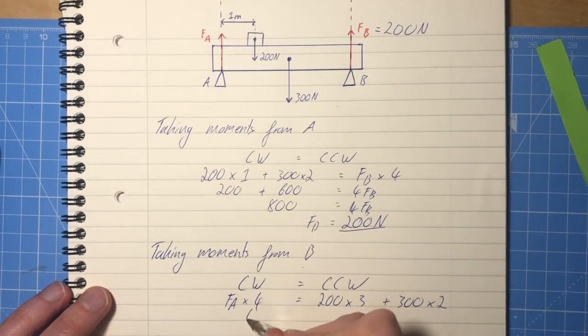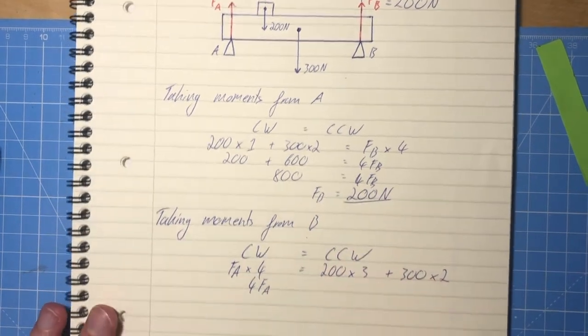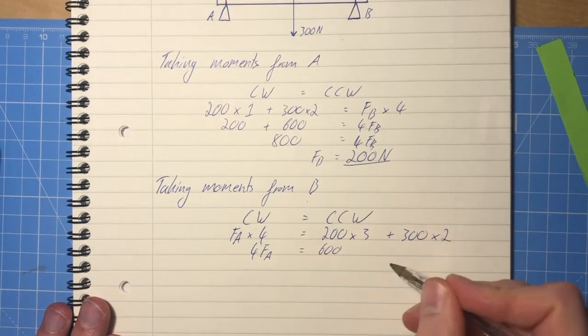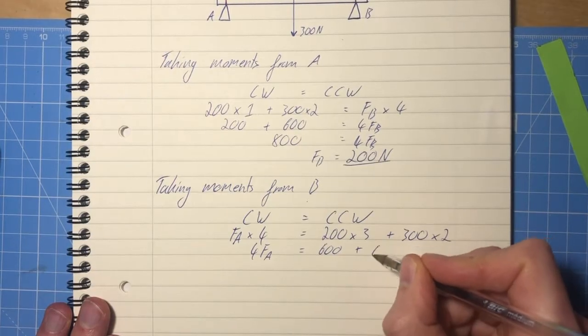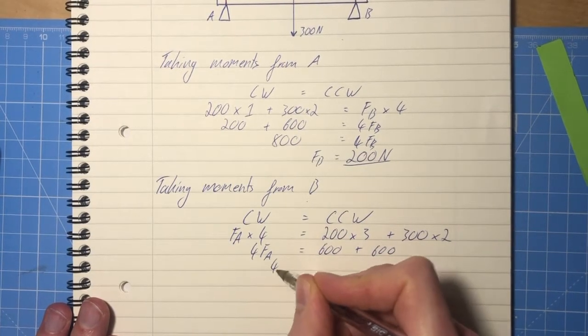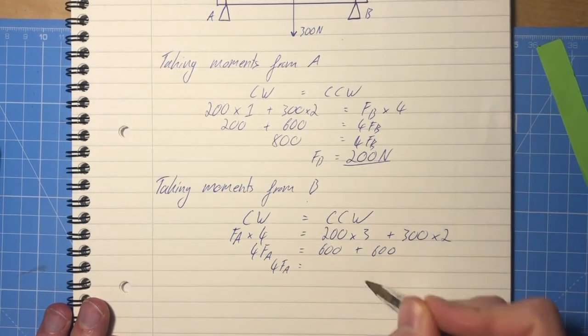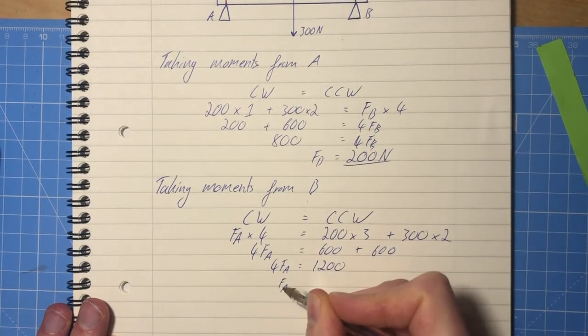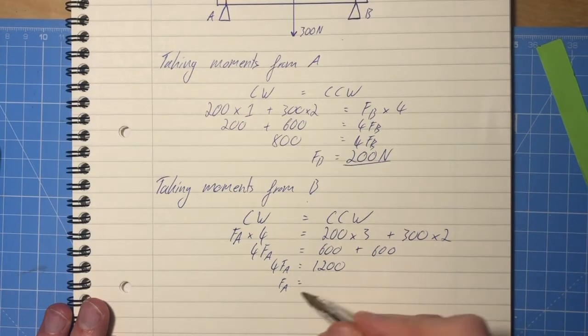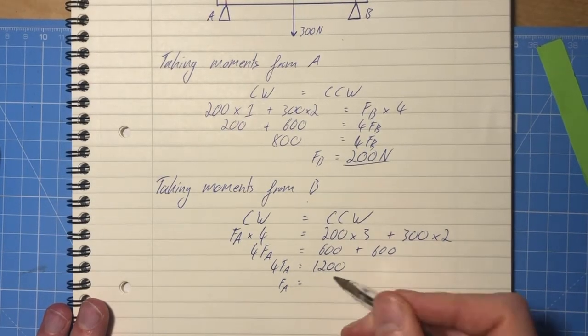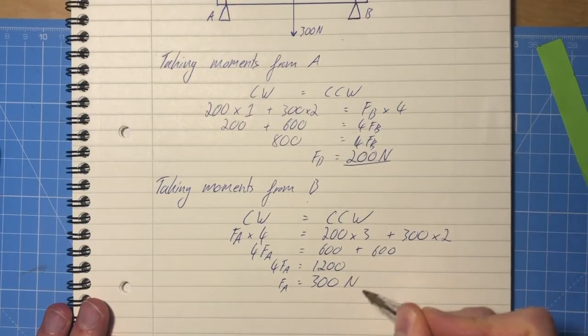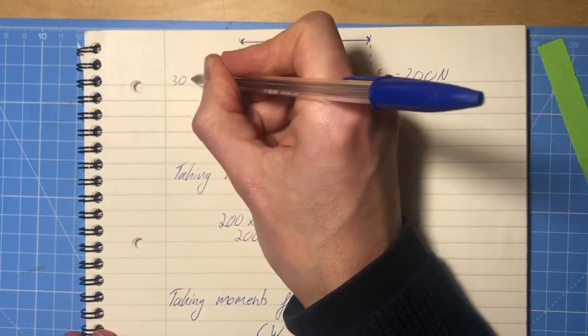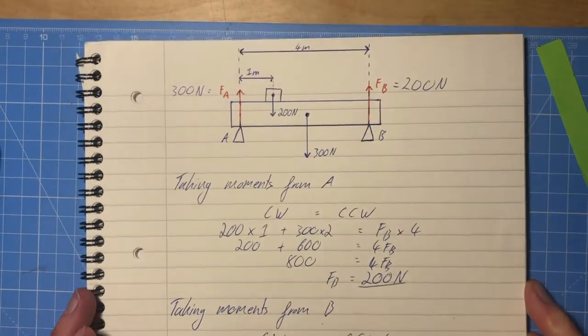So this gives us 4 FA equals 600 plus another 600. So 4 FA equals 1,200. And so FA equals 1,200 divided by 4, 300. And of course newtons, 300 newtons.